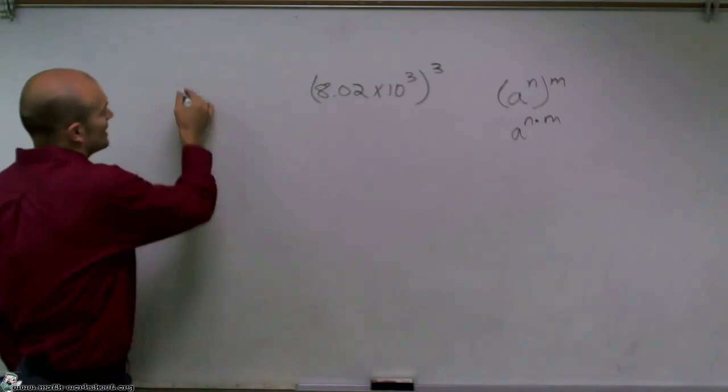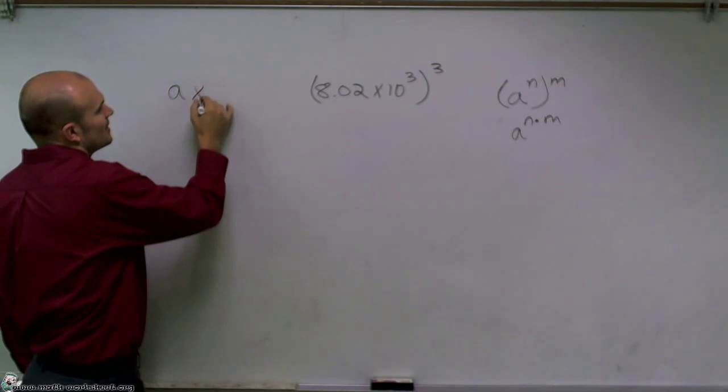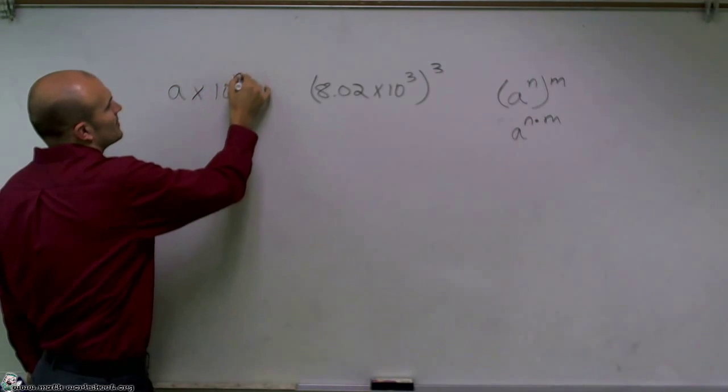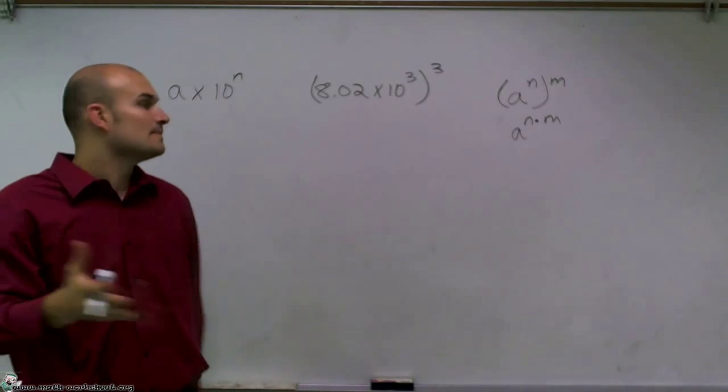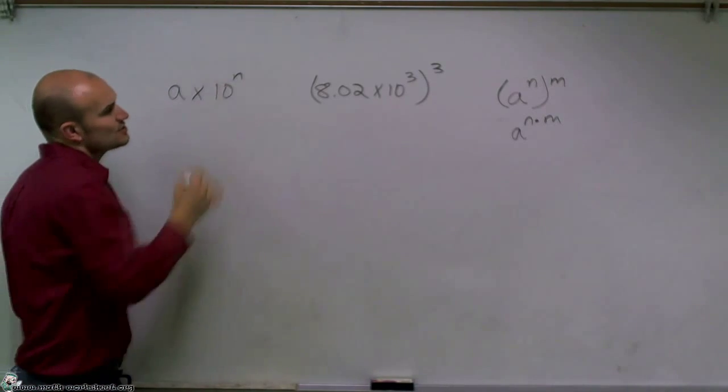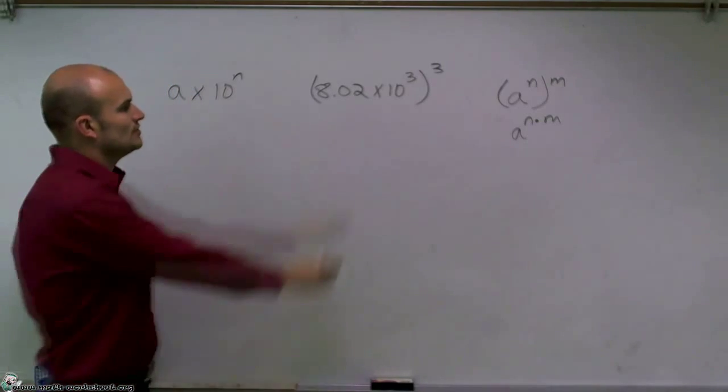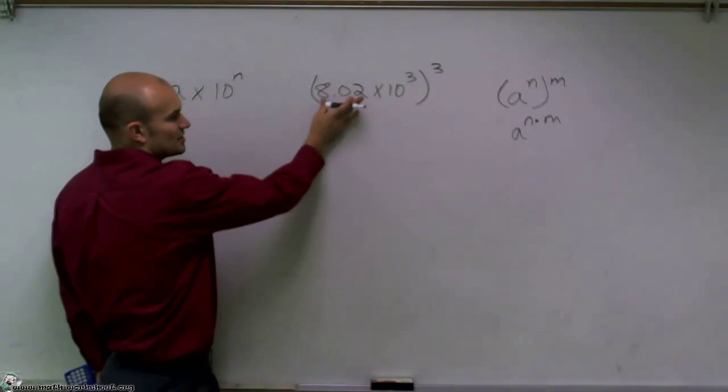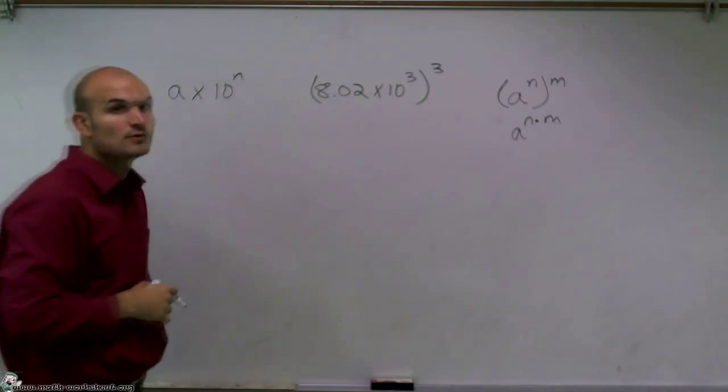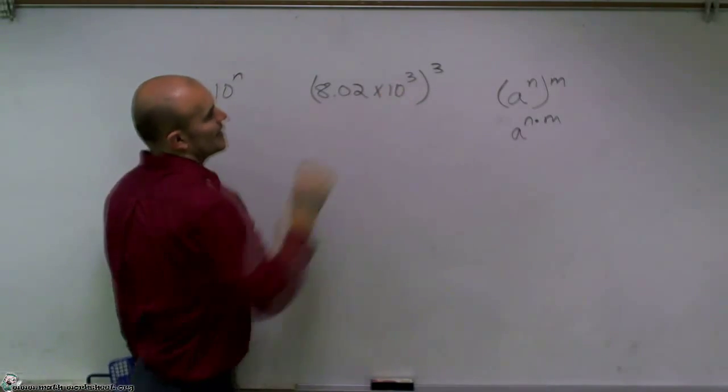And the next thing I also want you to remember is a number in scientific notation is any number a that's between 1 and 10 that's multiplied by 10 raised to the power n that is an integer. So you can see this is obviously in scientific notation. 8.02 is between 1 and 10, and then our n is an integer 3.